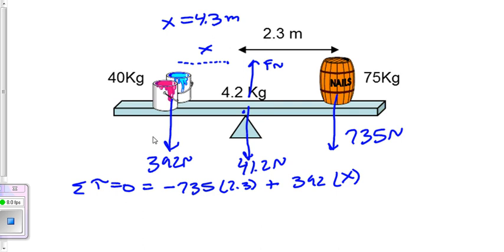Okay, so that was the second condition of equilibrium. The first condition is the sum of all forces equals 0, and we will use that to find the normal force. So we'll say sum of all forces in the y direction equals 0. In this case, there are no x forces.